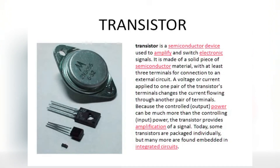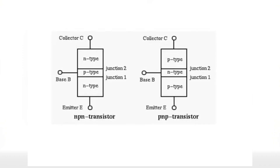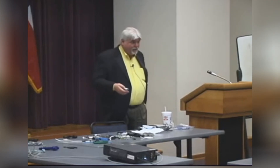This is a high-power transistor, medium-power transistor, and then it gets smaller. This is the way transistors are made: N-type material, P-type material, N-type material. We have two types of transistors — NPN and PNP.